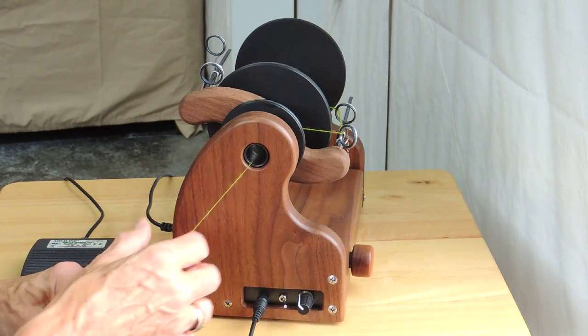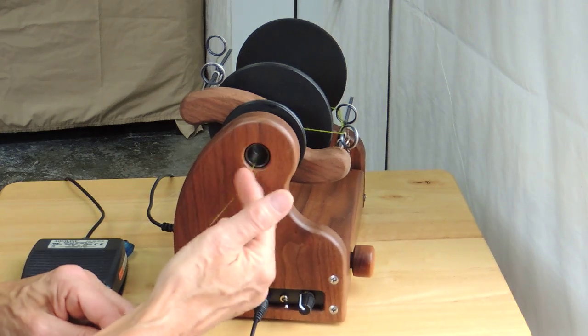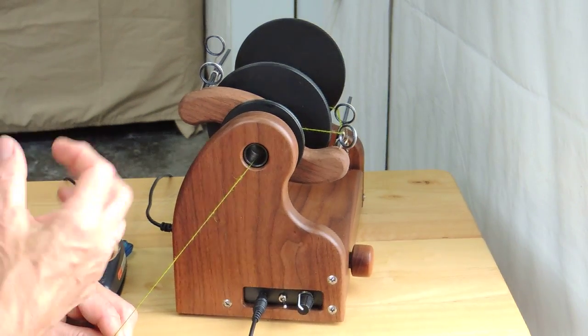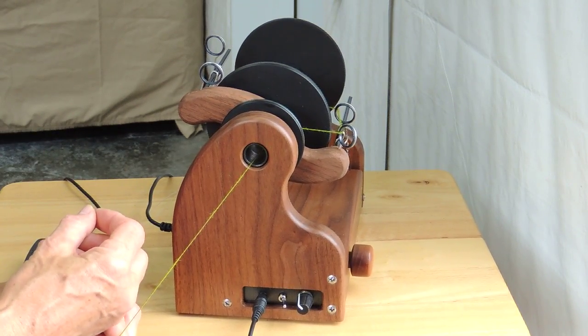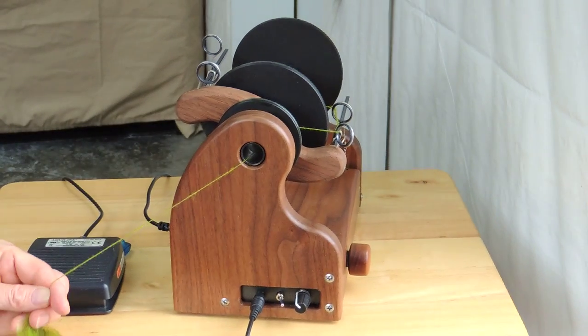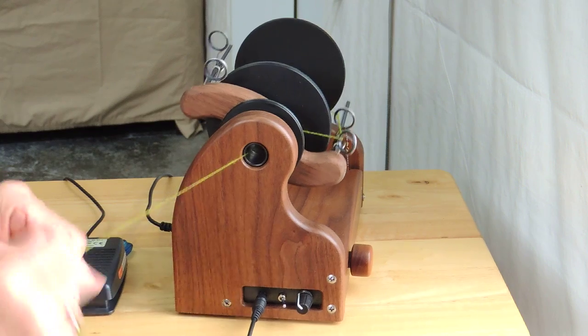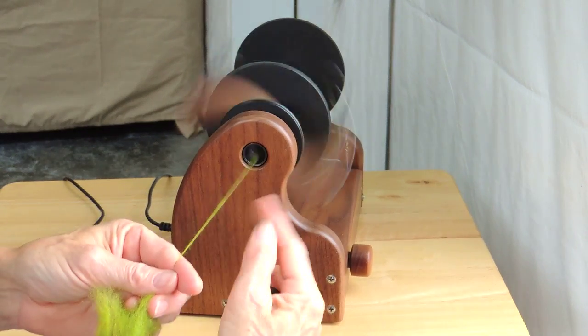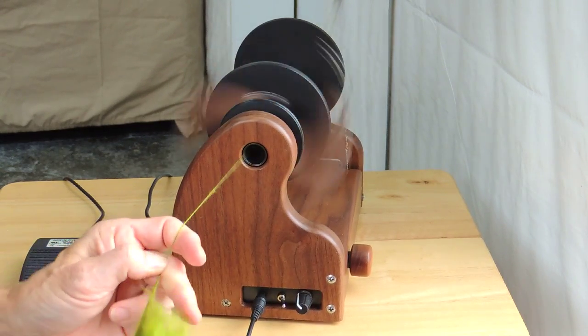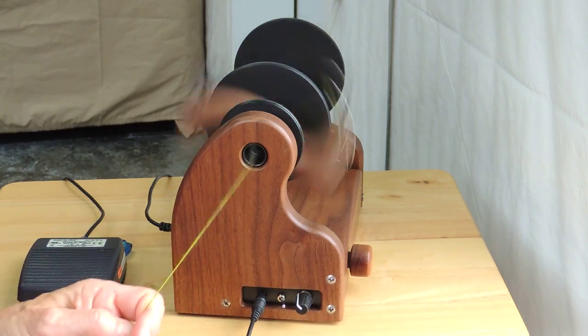Another thing that should be noticed is our orifice is 5/8 of an inch which is a really nice big orifice and allows you a great range of spinning but some people don't care for the bounce that they can feel when they're spinning finer yarns.